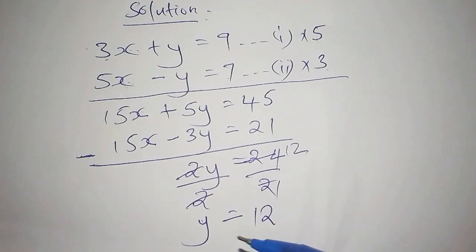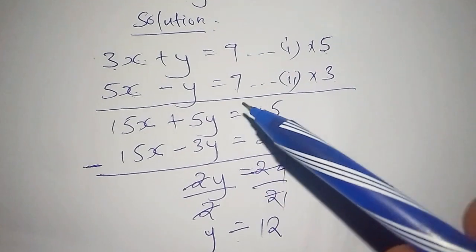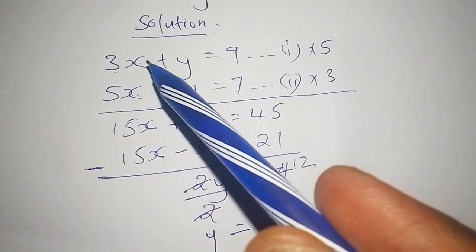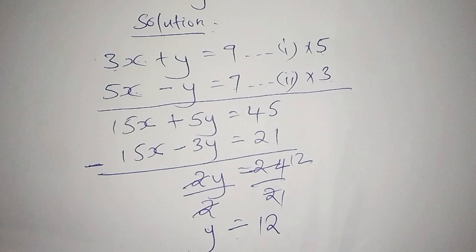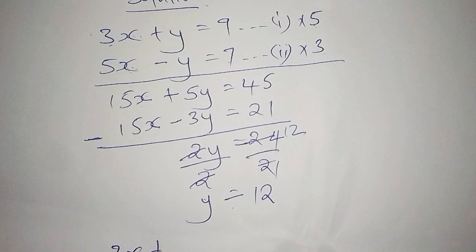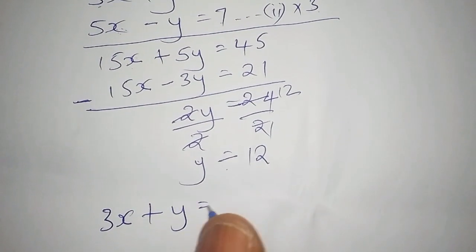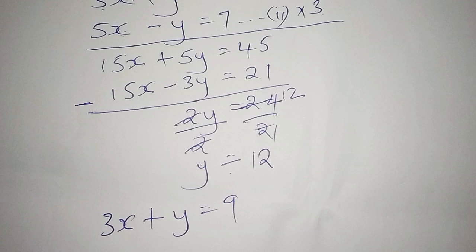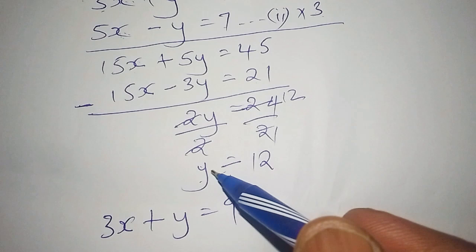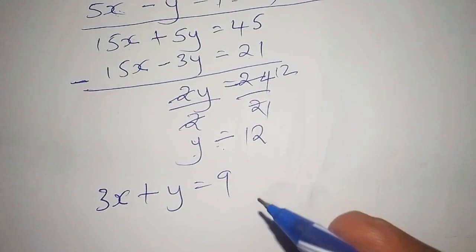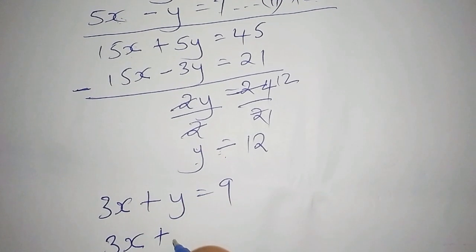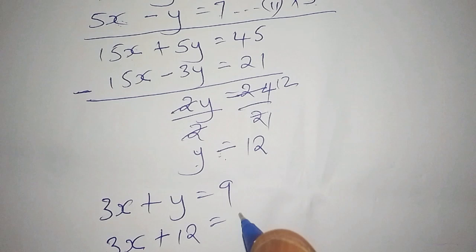So what about x? If you want to find x, you can pick any of the equations. We pick the first equation: 3x plus y equals 9. We substitute y with 12, so we have 3x plus 12 equals 9.